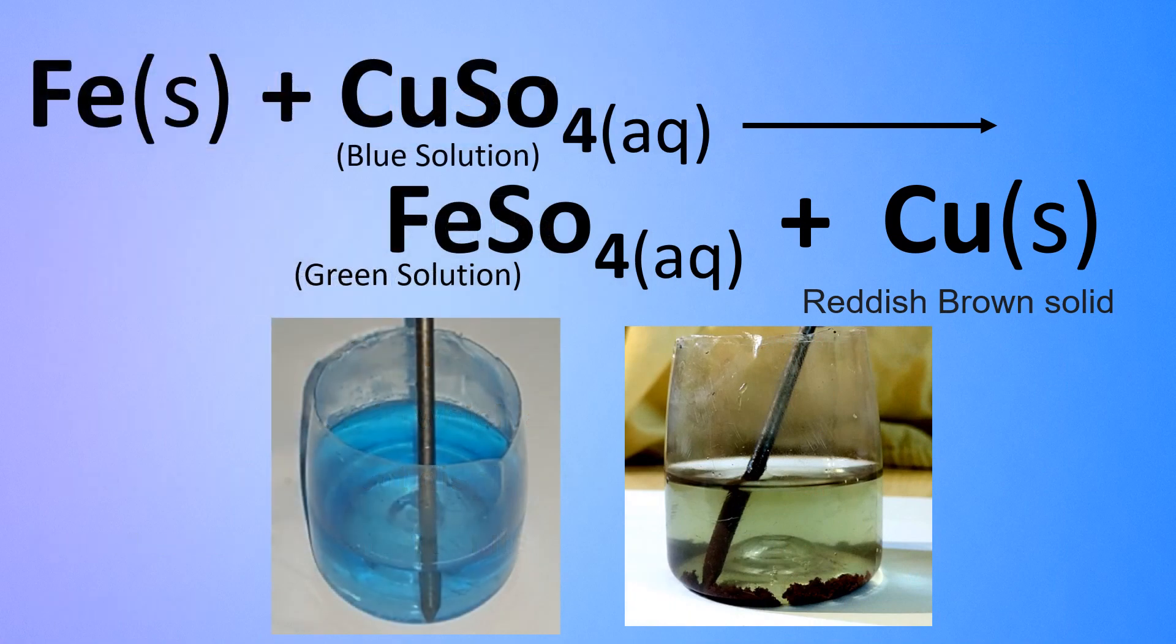Now, let's put this reaction into an equation to get a clearer understanding. Here, we have iron plus copper sulphate will become ferrous sulphate plus copper. From this, we can understand that the iron, because it is more reactive than copper, displaces the copper from the copper sulphate and becomes ferrous sulphate.